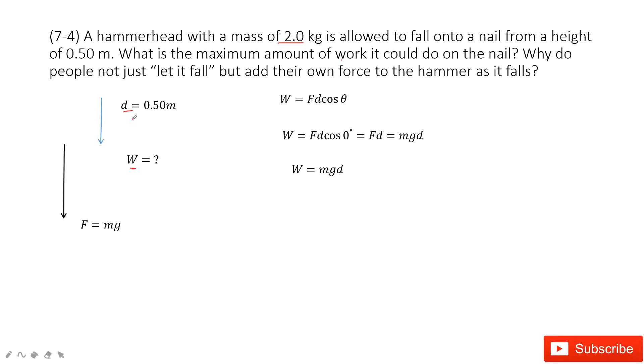Work equals force times displacement times cosine theta (W = Fd cos θ). The force comes from gravity of the hammer, so it's mg. The displacement d is 0.5 meter. The angle theta is zero because both the displacement and the force move downward.